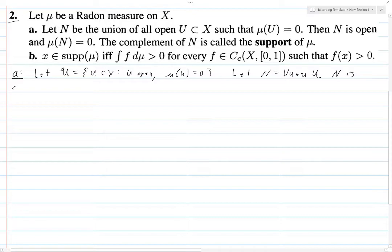N, what do we know about it? It's a union of open sets, and thus is open. So let K subset of N be compact. Basically, we're trying to show that the measure of N is 0. So we're going to use inner regularity, which holds on open subsets of Radon measures.